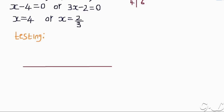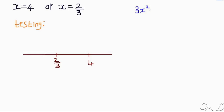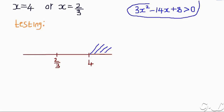We now use the testing method. After finding the values, you have to use the testing method. Since 2 over 3 is approximately 0.6666, it is less than 4, so 2 over 3 is on the left and 4 is on the right. Let's test values greater than 4. We can take 5, since 5 is greater than 4. You can get any value greater than 4, such as 6 or 10.